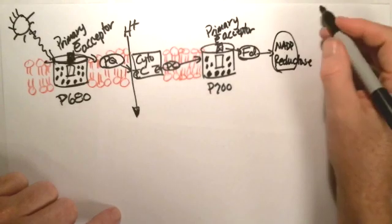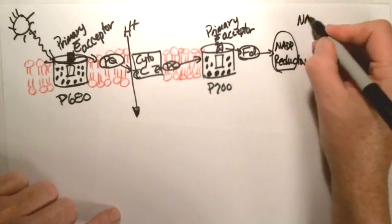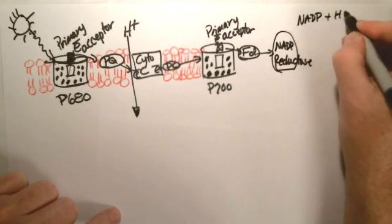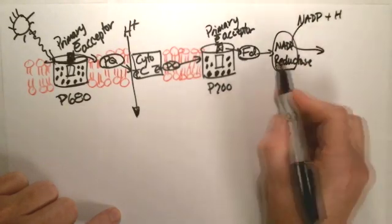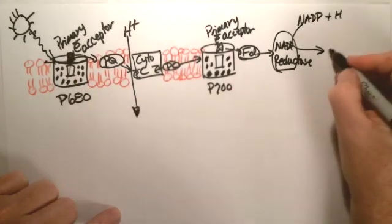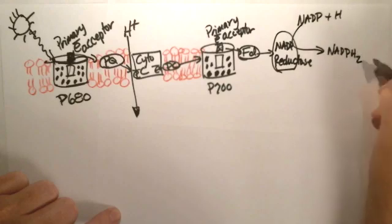This NADP reductase, just as I just told you, takes that NADP plus some hydrogen ions and stores that energy, that energy in that electron, that energy that came from way back over here, into NADPH2.